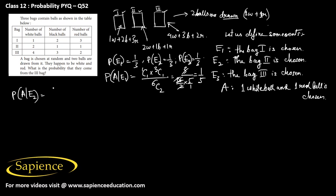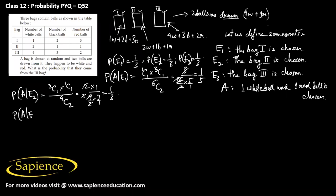P(A|E2) is the probability of choosing one white ball and one red ball from bag two. There are two white balls so 2C1 ways, and one red ball so 1C1 ways, with four balls total so 4C2 ways. This gives 2×1 divided by 6, which simplifies to 1/3. P(A|E3) for bag three: four white balls gives 4C1, two red balls gives 2C1, and nine total balls gives 9C2. This gives 4×2 divided by 36, which equals 2/9.